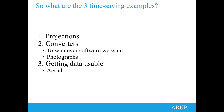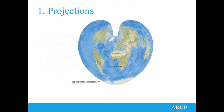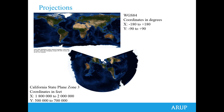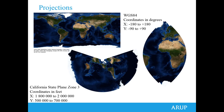Moving on to the three time-saving examples: projections, followed by conversions, and then getting data usable. Beginning with projections — a lot of people Kate works with don't really understand projections very well. They're happy to use data just as it comes and only start to worry when new data doesn't line up with their current data. As GIS people, we need to make sure that a correct coordinate system is set and that people are working in the right units.